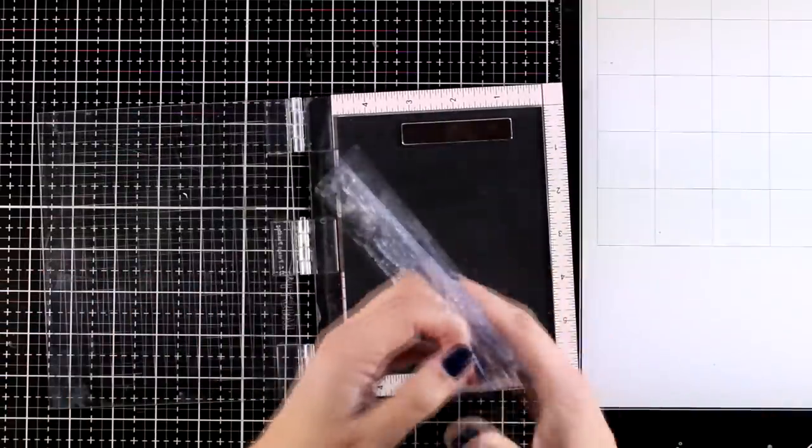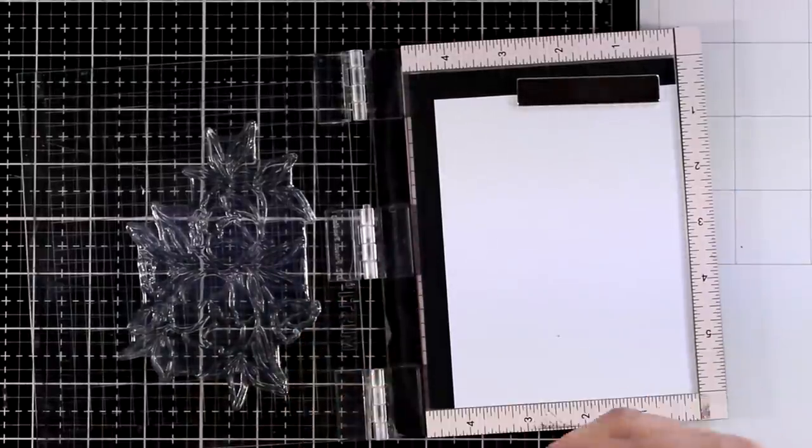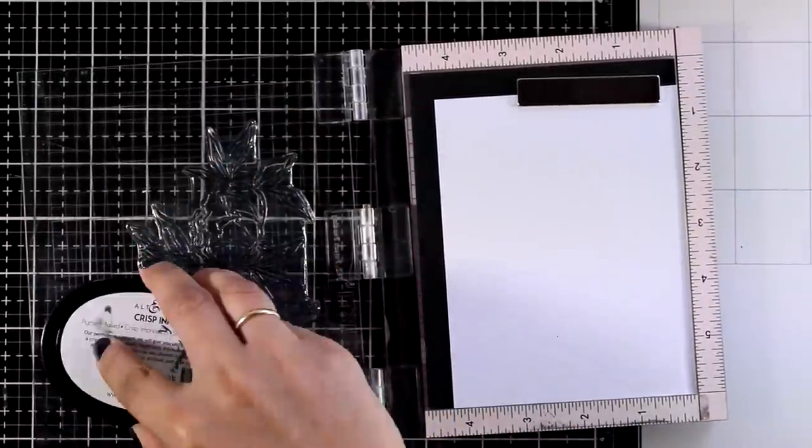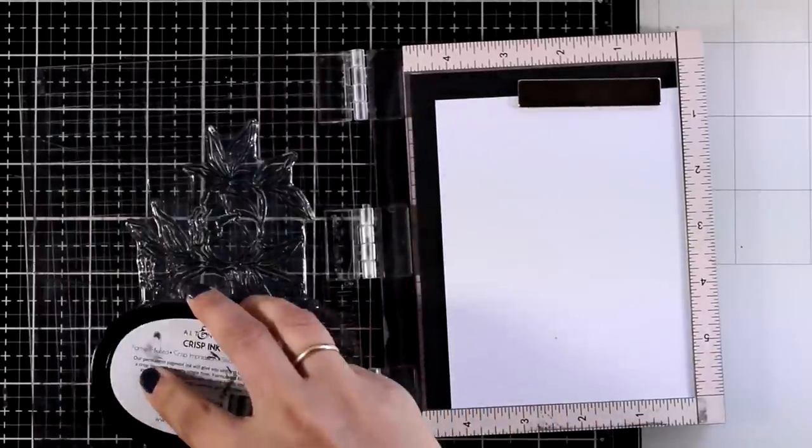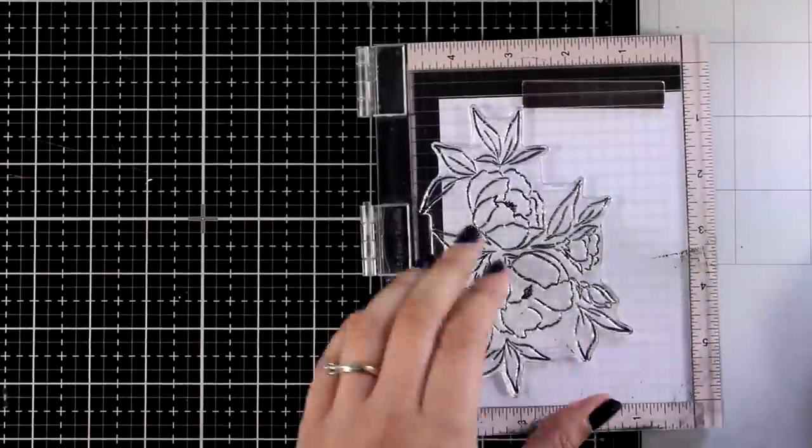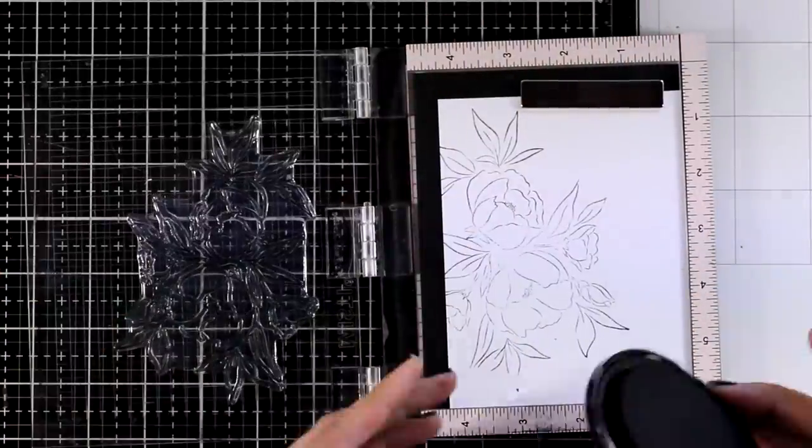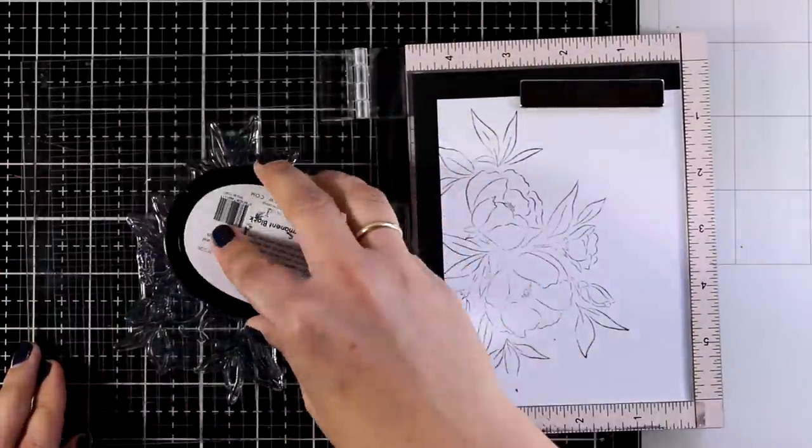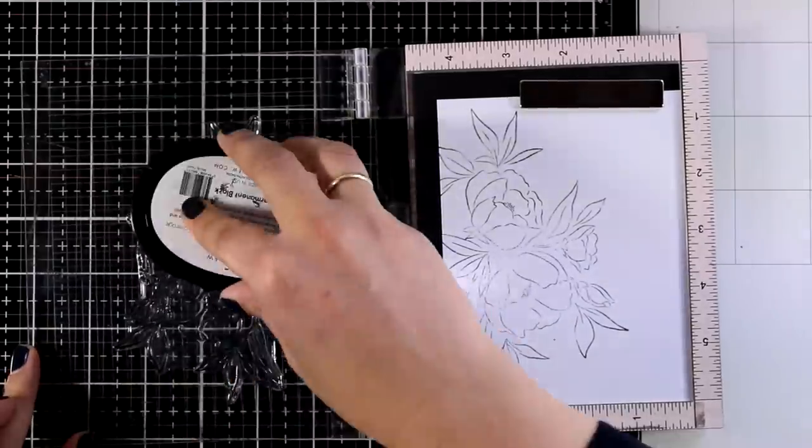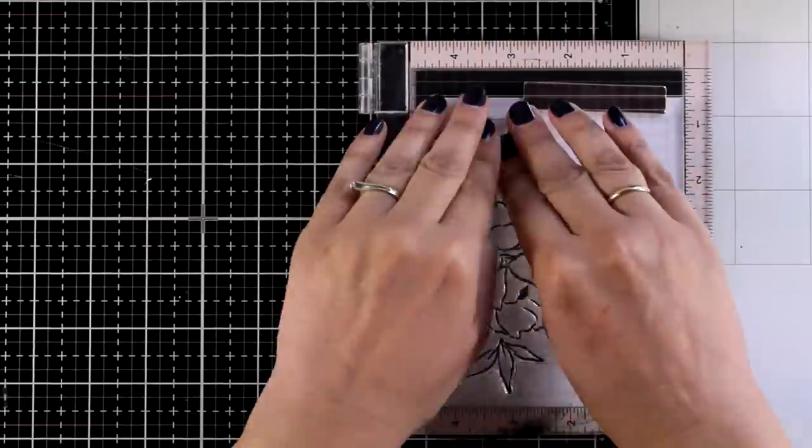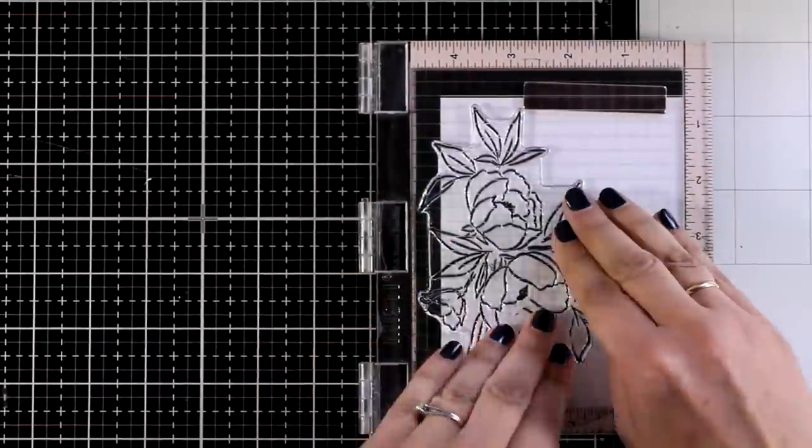I'm going to start by stamping my image. For that I'm working on my MISTI, this is Neenah Solar White cardstock, and I'll be stamping with permanent black ink by Altenew just because I'll be working with my alcohol markers to add color on my images. This is a big stamp and it's the first time I'm inking it, so it's a good idea to use a MISTI so that I can stamp again on top to get a good impression.